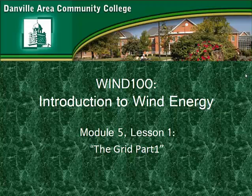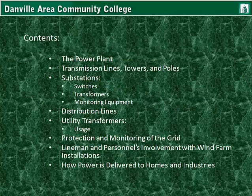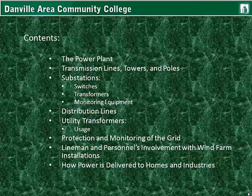This is Lesson 1 for Module 5, The Grid, Part 1. In this lecture, I will discuss the power plant and its transmission lines, towers, and poles, also substations, distribution lines, the purpose of the utility transformer, protection and monitoring of the grid, linemen and linemen personnel's involvement with wind farm installations, and how power is delivered to homes and industries.